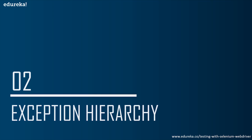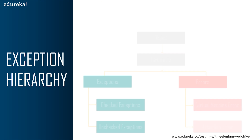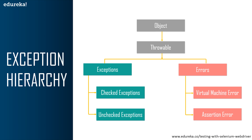Let's move further and look at the exceptions hierarchy. All exceptions and error types are subclasses of the class Throwable, which is the base class of the hierarchy. One branch is headed by Exception, which is used for exceptional conditions that user programs should catch. Another branch headed by Error is used by the Java runtime system to indicate errors that are associated with the runtime environment. Under exceptions, there are two types: checked and unchecked.